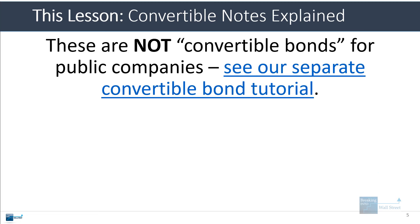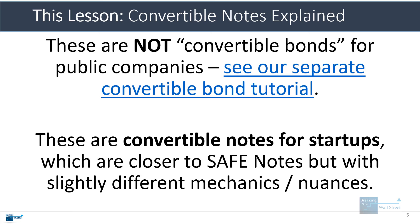To be clear, we're not talking about convertible bonds here. We actually have a separate tutorial crash course on convertible bonds for large public companies. We're talking about convertible notes here that startups would use to finance themselves when they have very little revenue or they're not at all profitable yet. Convertible notes for startups are closer to safe notes, but some of the mechanics and nuances differ a little bit, and we'll go through those here and do a full side-by-side comparison to safe notes.